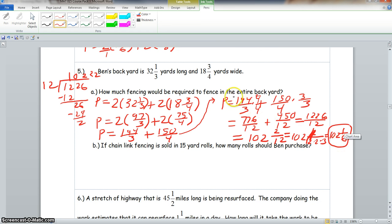Oh, and I forgot too, we have to put our units. We have to make sure we put our units. So I'm going to write this above here. So it would be 102 and 1 sixth yards. Because remember, we must write our units.